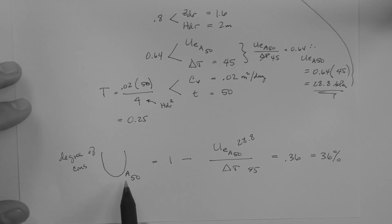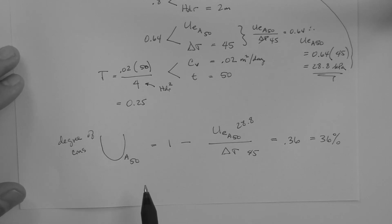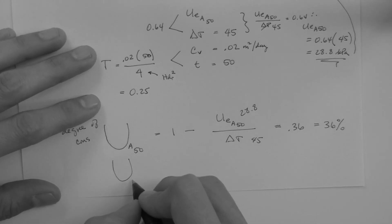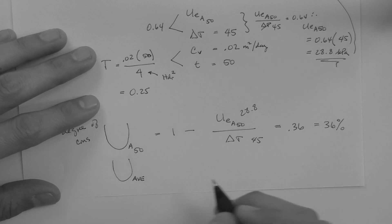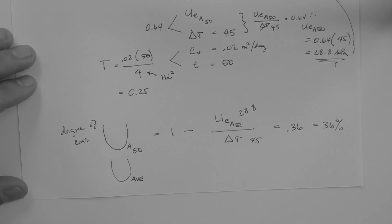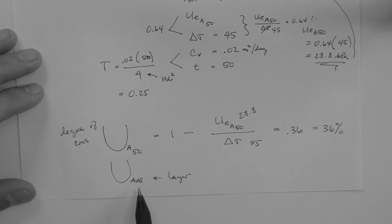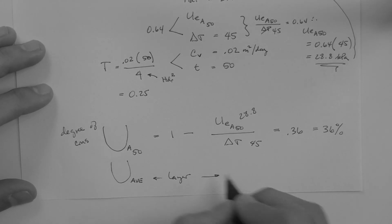That is the degree of consolidation at a given point at a given time. There is another degree of consolidation, which is also capital U, but is the average degree of consolidation for the layer. This is for the layer. And this is the one that's used to determine the settlement of a layer due to consolidation.